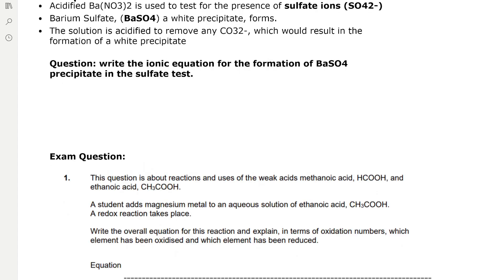Acidified barium nitrate is used to test for the presence of sulfate ions SO4 2-. Barium sulfate, a white precipitate, forms, BaSO4. The solution is acidified to remove any carbonate ions, which would result in the formation of a white precipitate.